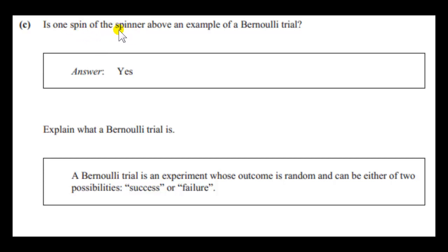One spin of the spinner is an example of a Bernoulli trial. This is something I discussed in a previous video. A Bernoulli trial is a trial in which there are just two outcomes. That's the key thing. There are just two outcomes. And sometimes the outcomes are referred to as success or failure. Since there are only two possible outcomes, the probability of a success plus the probability of a failure must equal one. Since S or F are the only two possible outcomes, the sum of their probabilities must be a certainty, must be one.